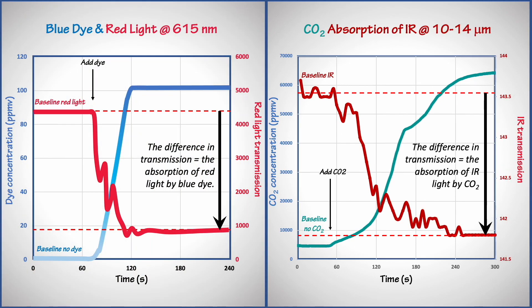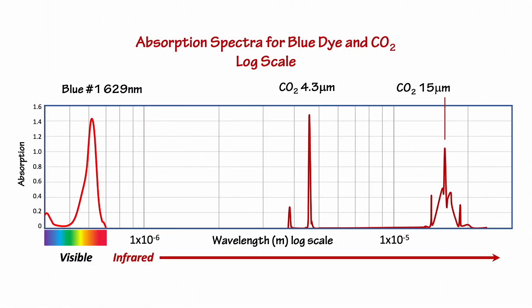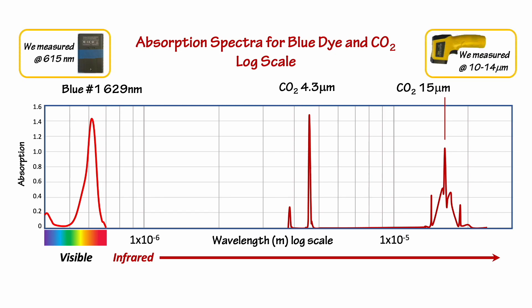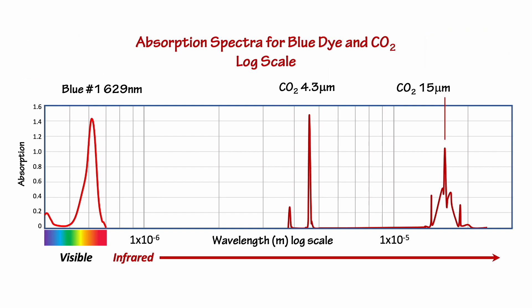Here are our two experiments side by side. Red light absorbed by the blue dye and infrared light absorbed by carbon dioxide. Let's take these two results and plot them as an absorption spectrum. Here are the absorption spectra for blue dye and carbon dioxide plotted together showing the wavelengths where they absorb. Notice that CO2 has two absorptions. The one that we measured is the longer wavelength absorption at 15 micrometers.